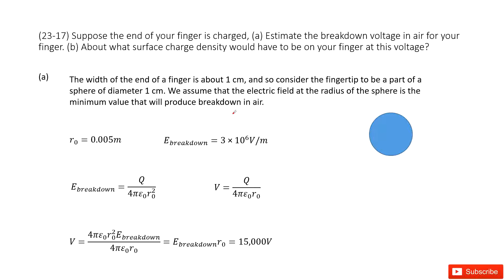We consider the end of your finger as a spherical object. It carries charge Q, and we need to find the breakdown voltage in air for your finger. So how can we do that?